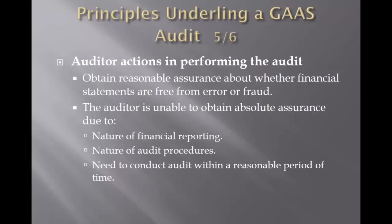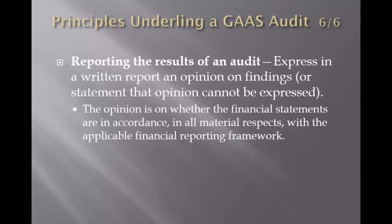A key word here is professional skepticism — having a questioning mind and critical assessment of audit evidence. This professional skepticism needs to permeate throughout the audit team. Junior auditors on the front line collect evidence and convey what they see to a senior auditor, who conveys to the manager, who conveys to the audit partner making the decision. If professional skepticism doesn't take place at the junior auditor level, items may be missed. It's very important to have professional skepticism throughout the complete audit.